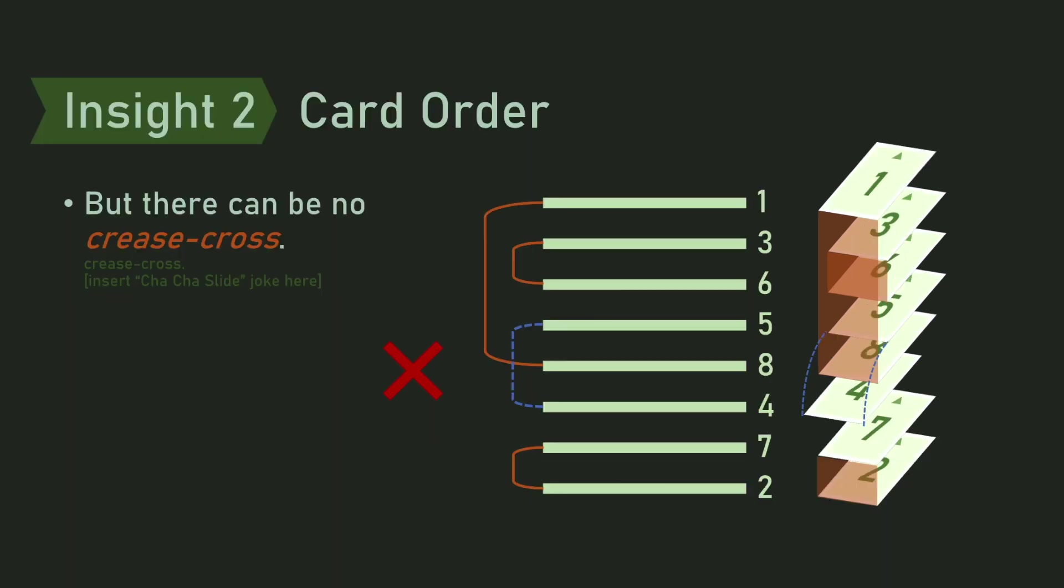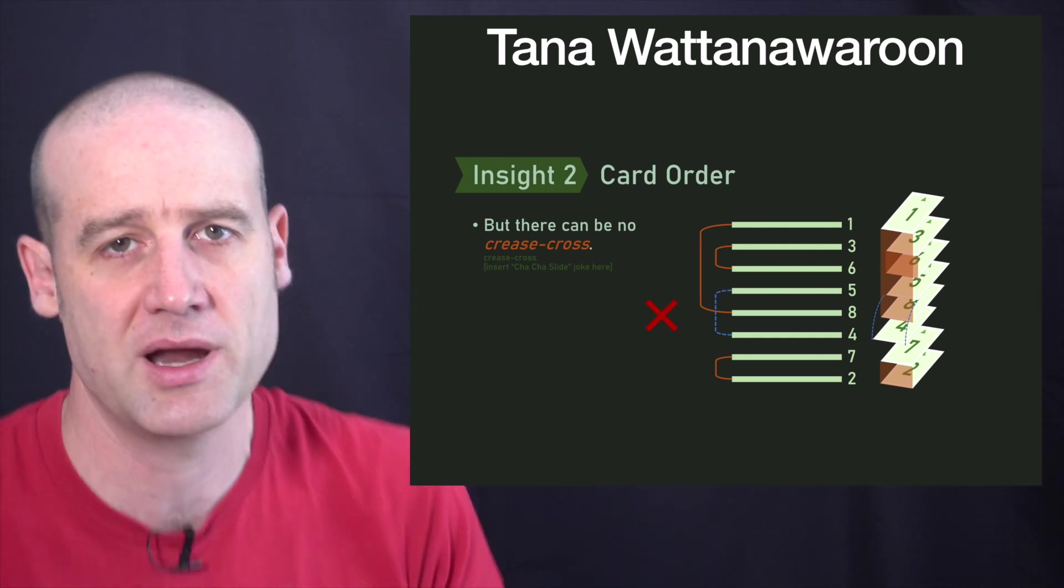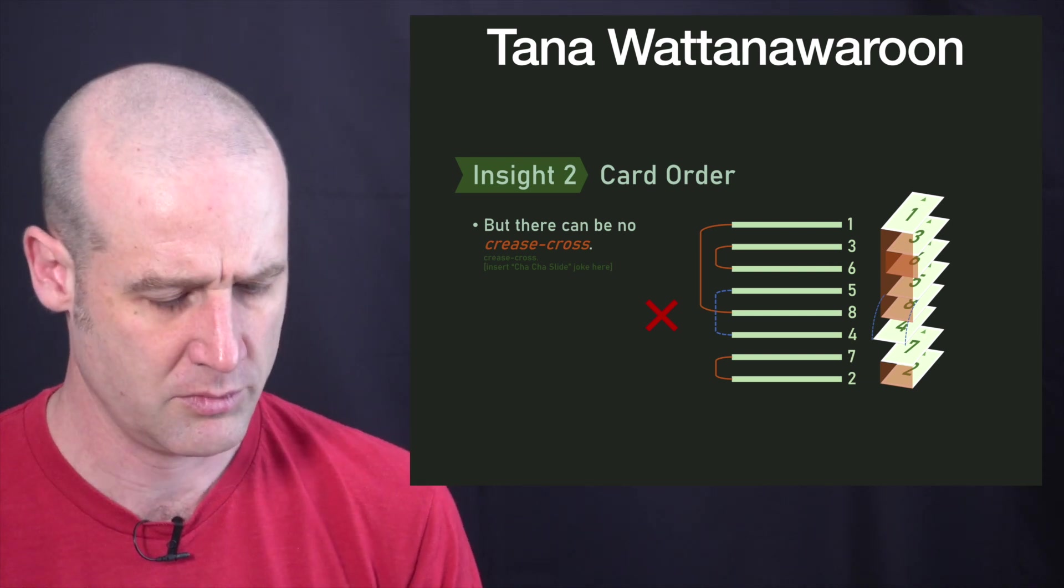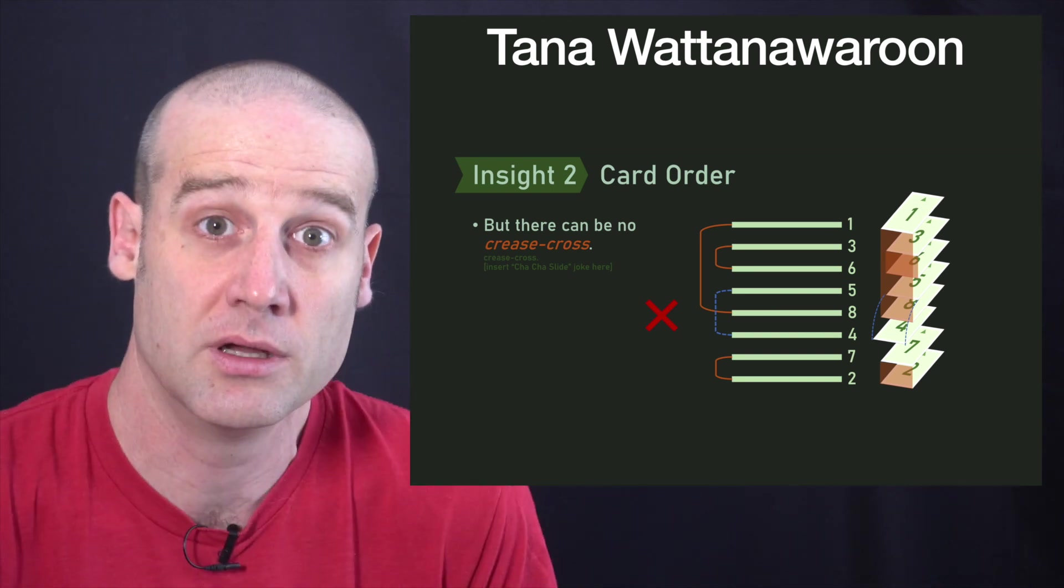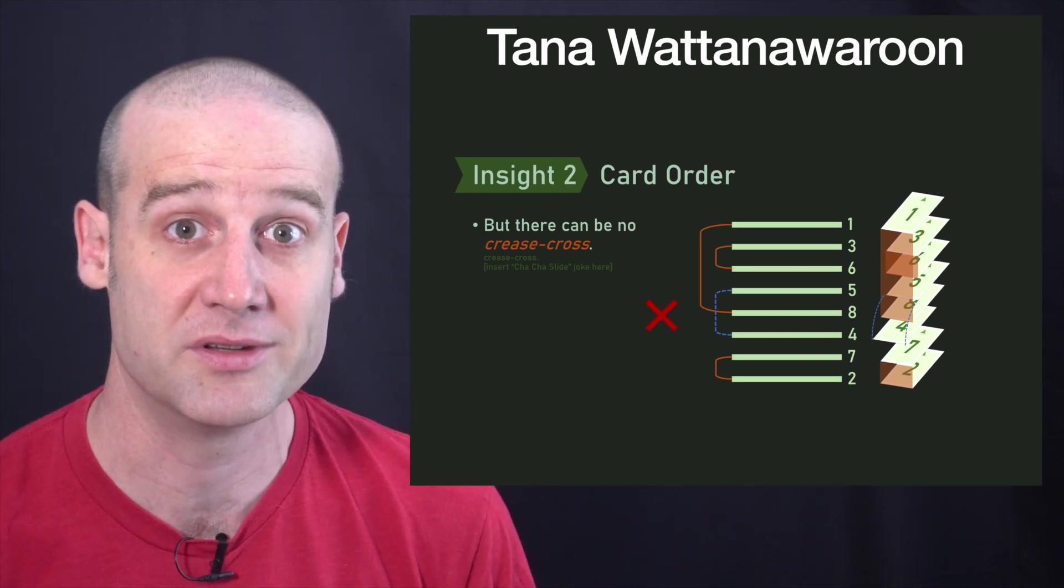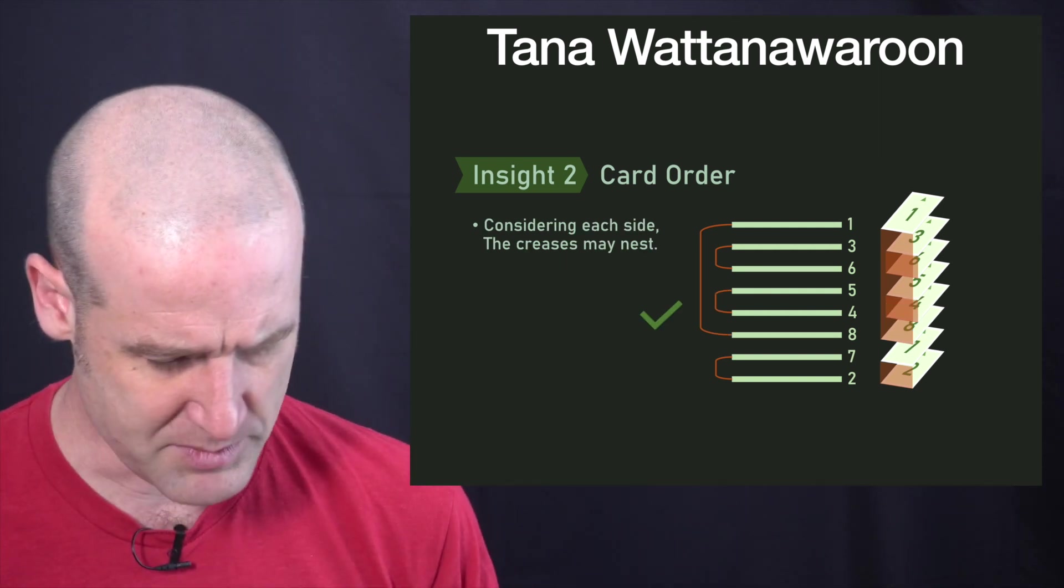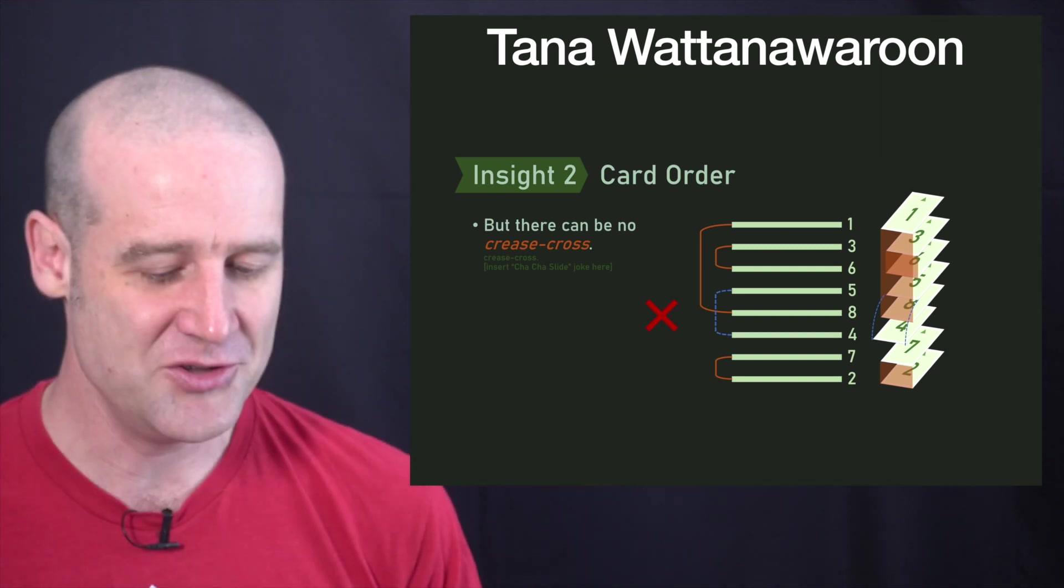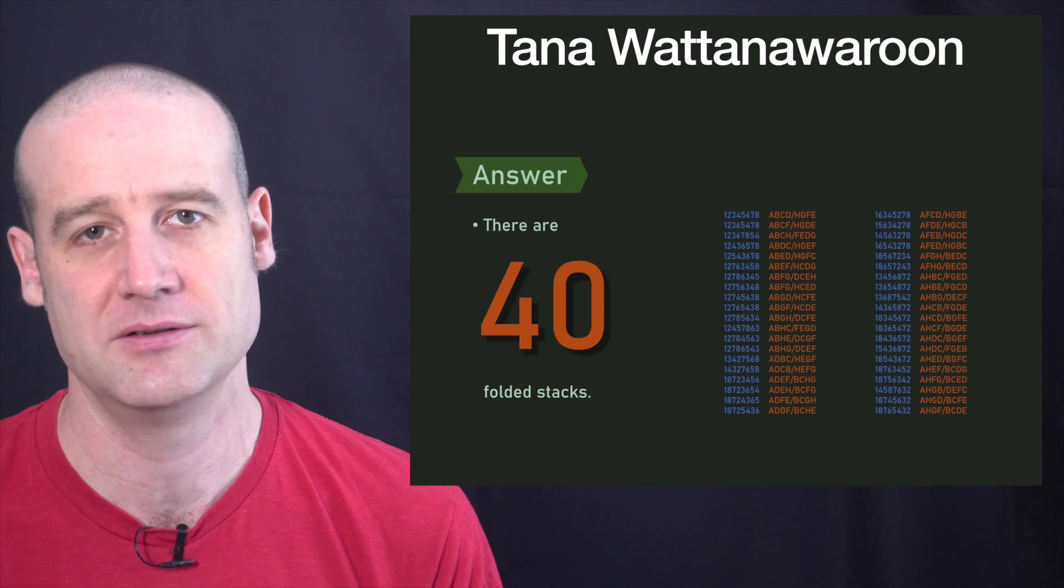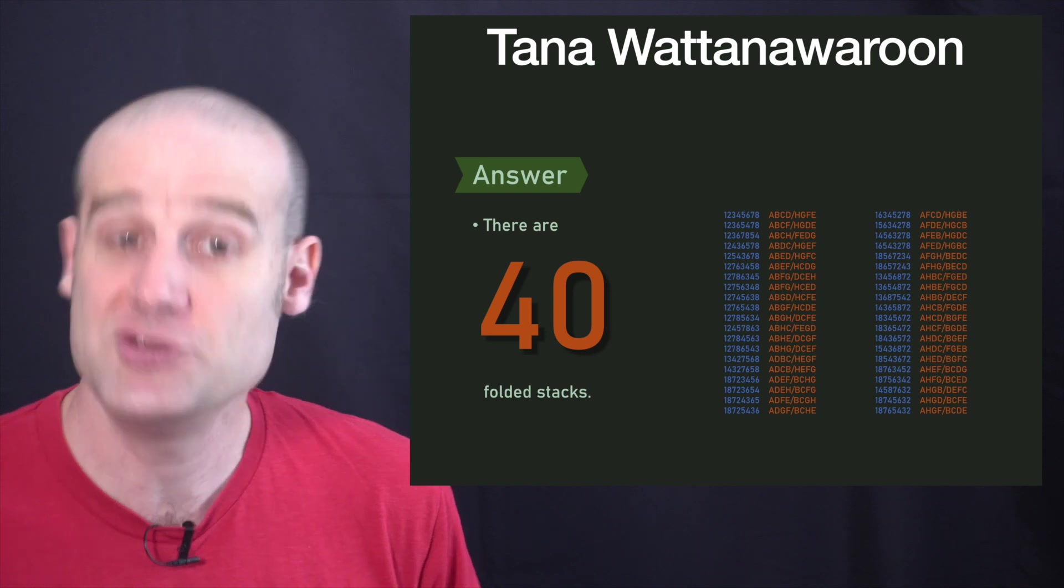Oh, Tanner's put insert cha-cha slide reference here. Huh. I don't know what that means. I mean, it is a slide. It's part of the presentation, but I don't know what that's got to do with crease cross. Huh. Crease cross. There you go. Personally, I would have pointed out that the creases have to jump, jump. But, you know, that's just me. I'm old. So anyway, once you realize that you can't have the creases crossing, you then reduce it down to the number of cases where you have arrangements on the different sides such that it all holds together. And you get 40.